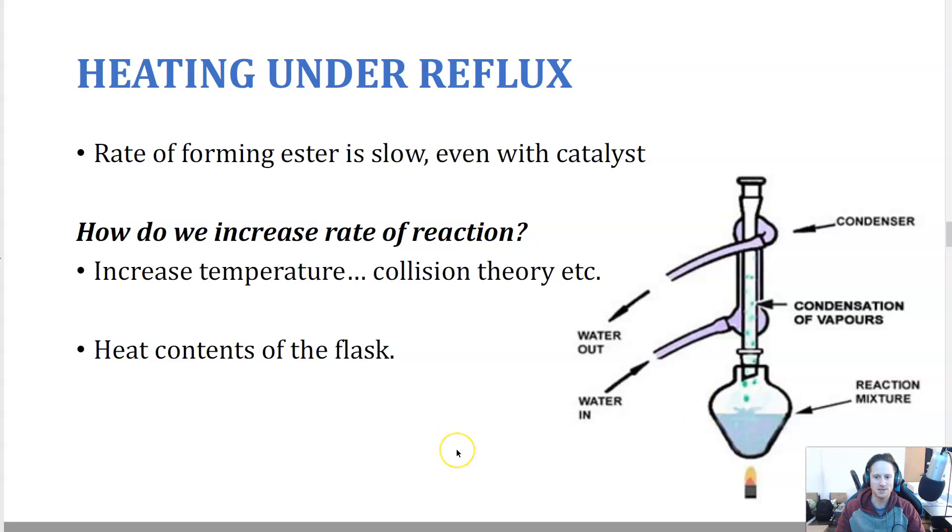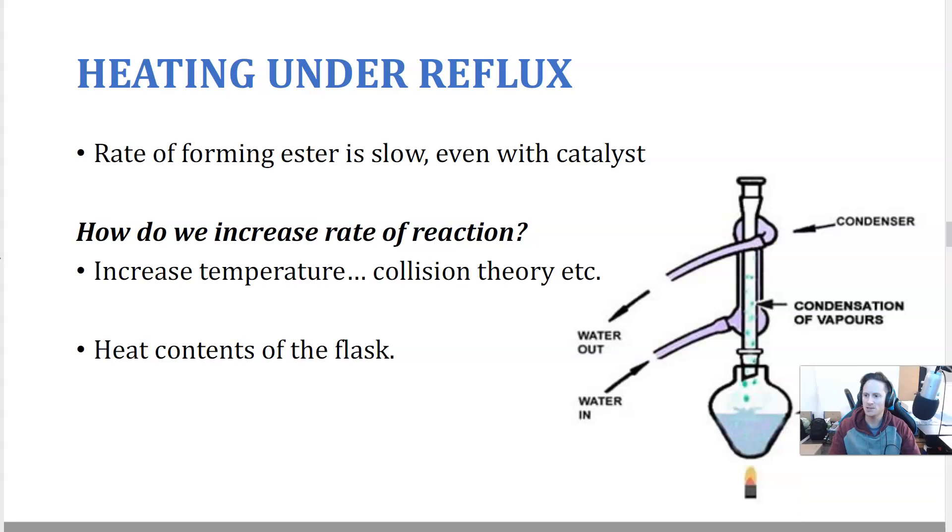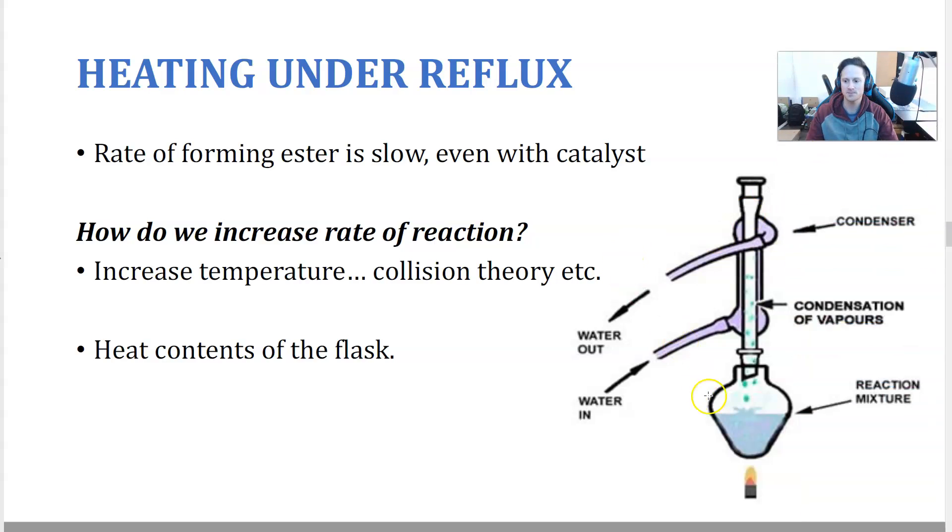So the rate of formation of an ester is very slow, even with a catalyst. So what we need to do is we need to heat under what's called reflux. So this is the setup for reflux. You have a heat source, you have a flask, this is a pear-shaped flask, and you have a condenser sitting up the top. So the condenser cools the vapor down. So essentially what's happening here is this will gently boil.